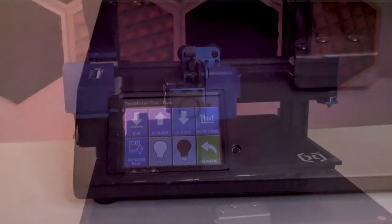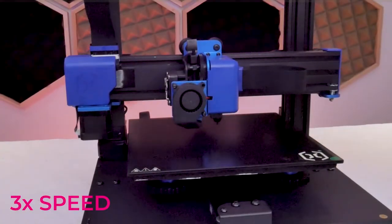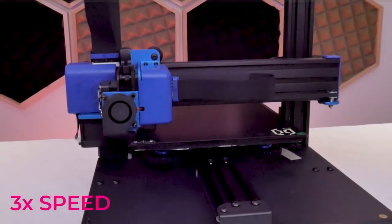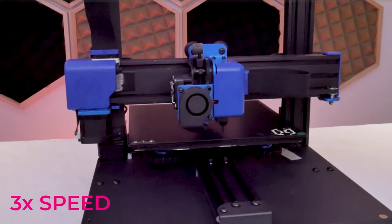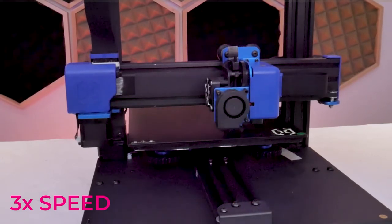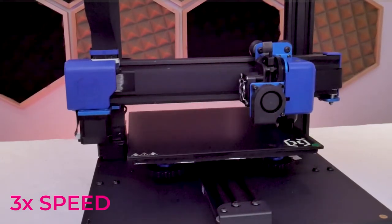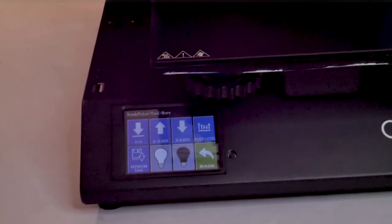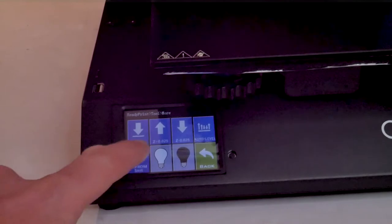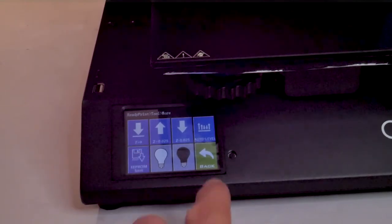Hit more and then you can hit auto level. Wait for the printer to probe all of the positions on the print bed and then we can get into making fine adjustments of the zed offset. Just don't forget to hit that EEPROM save button each time we make adjustments to the auto bed leveling or the zed offset.